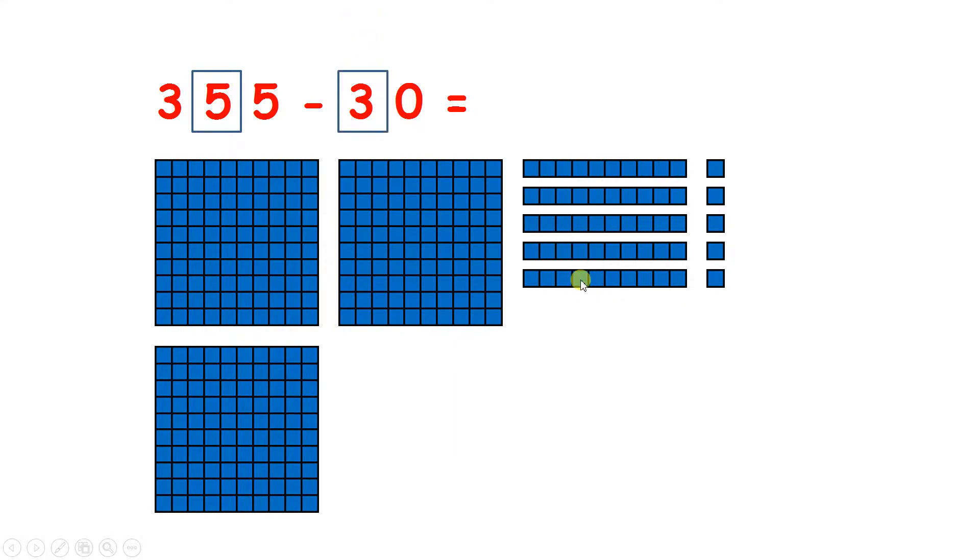So if we take away one, two, three tens, we now have 325 because five minus three is two.